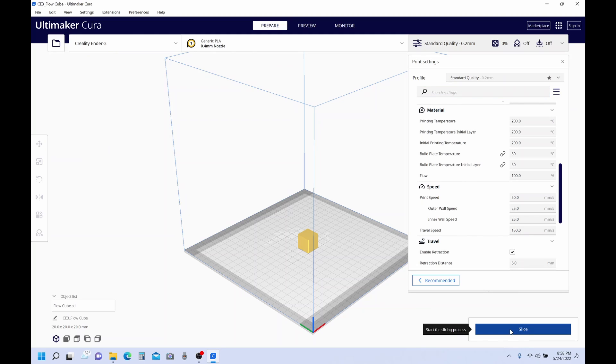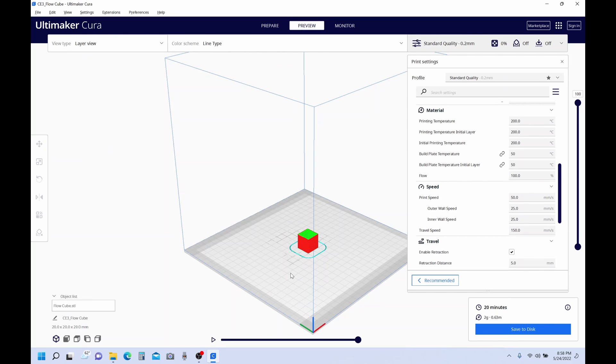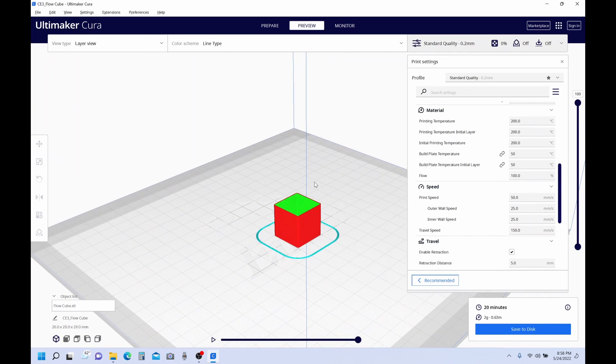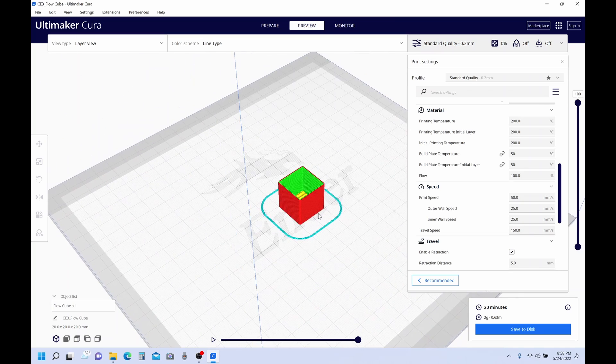And what we're going to do is make sure that our flow is set at 100%, and it is. So, we're going to go ahead and slice this. And now we're going to preview. 20 minutes, not bad. And as you can see, it has no lid.